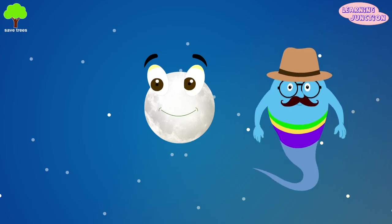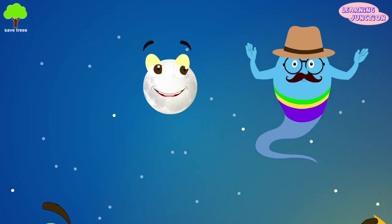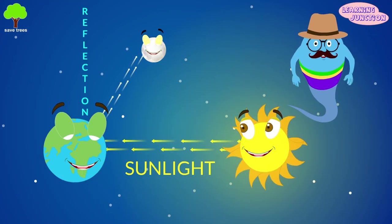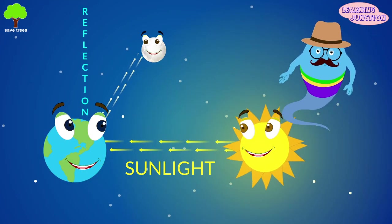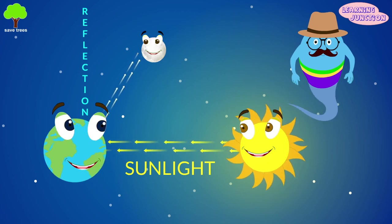The moon itself doesn't emit any light like the sun. What we see when we look at the moon is sunlight reflected off the moon.